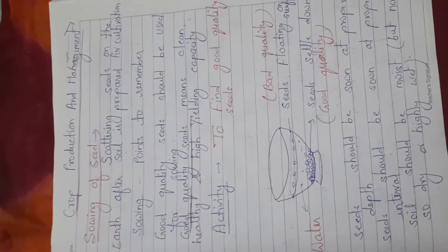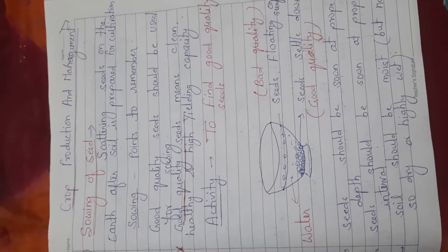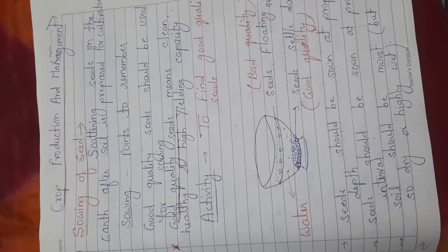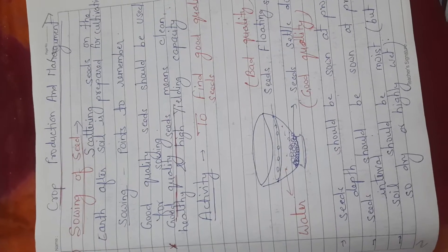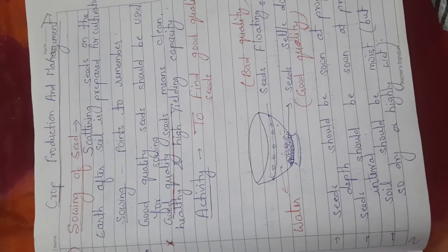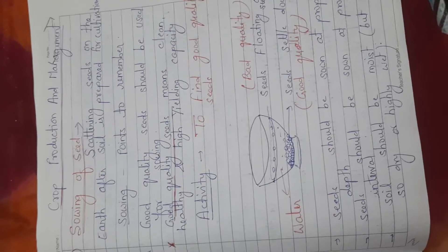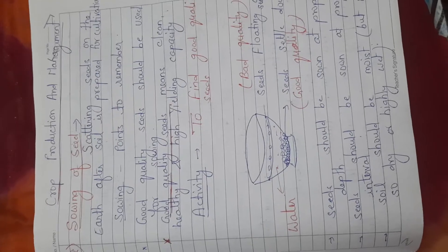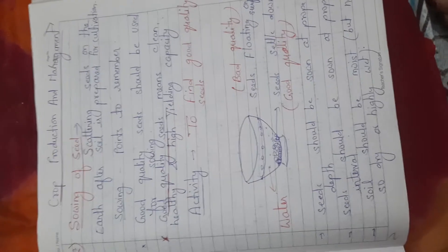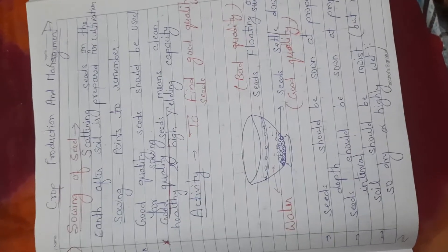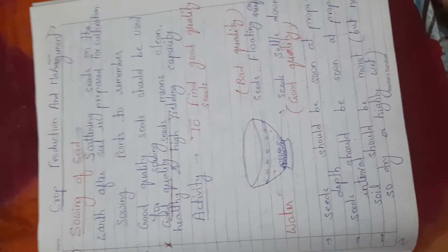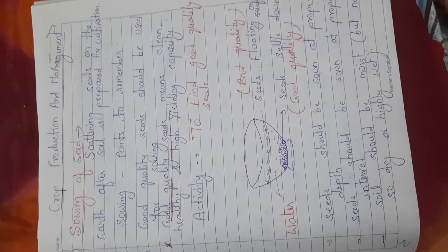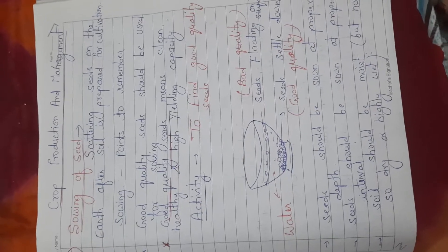So what do you mean by sowing of seeds? Sowing of seeds means scattering seeds on the earth's surface after soil has been prepared for cultivation. But before sowing the seeds, there are certain things we have to keep in mind.